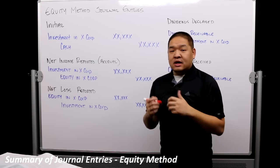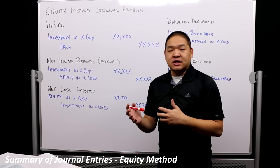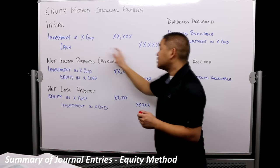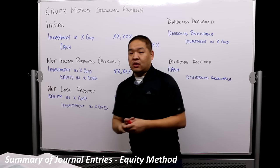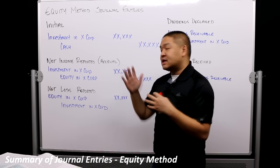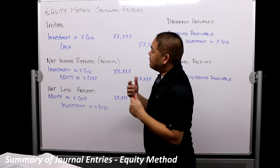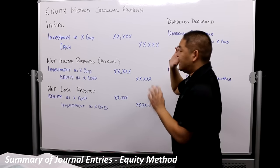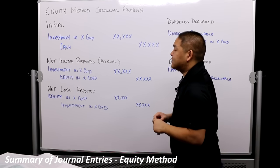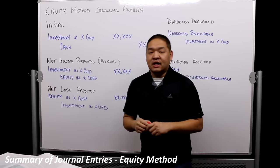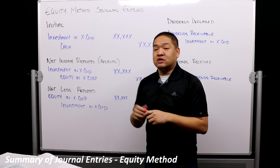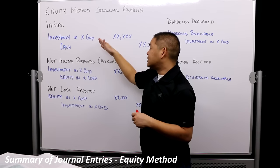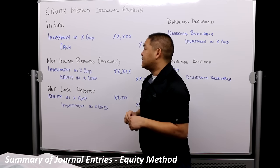Cash or some kind of asset is going to be exchanged in that transaction, so cash is going to go down or the asset is going to go down. Therefore we'll have a credit to cash and a debit to an account called Investment in X Corp. Sometimes these acquisitions can be done in cash and stock, so we would have to make entries based on the asset or equity given up to receive that investment in the investee.